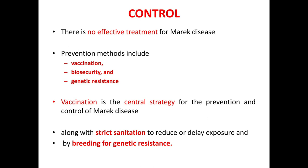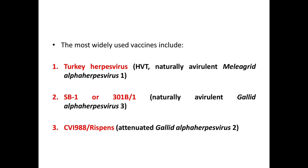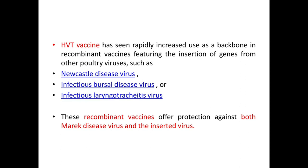Coming to control measures, there is no effective treatment for Marek's disease. Prevention methods include vaccination, biosecurity, and genetic resistance. Vaccination is the central strategy for prevention and control, along with strict sanitation to reduce or delay exposure and breeding for genetic resistance. The most widely used vaccines are: first, turkey herpesvirus or HVT, which is the naturally avirulent Meleagrid alphaherpesvirus 1; second, SB1 or 301B/1, which is Gallid alphaherpesvirus 3; and third, CV1988 or Rispens, which is an attenuated Gallid alphaherpesvirus 2.